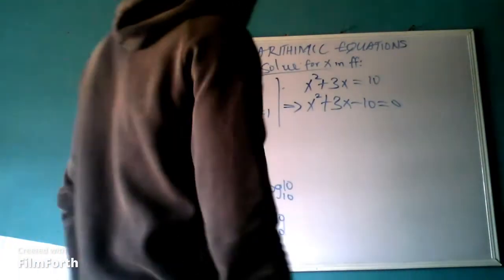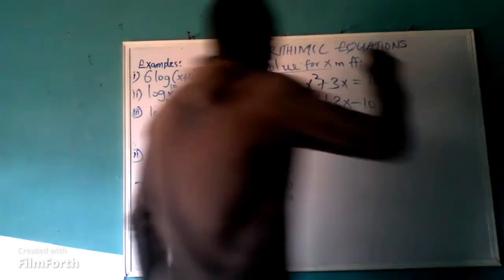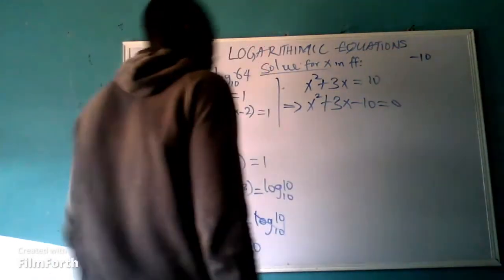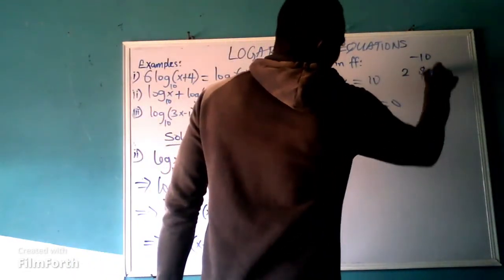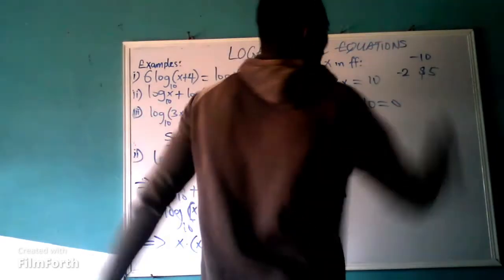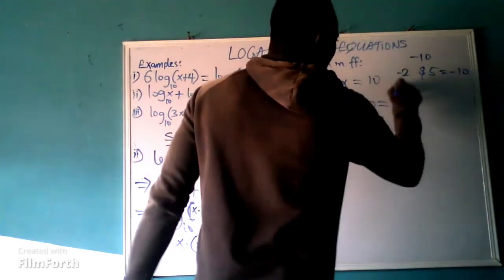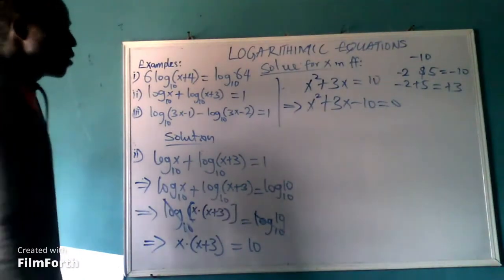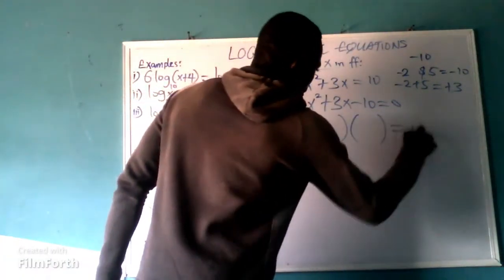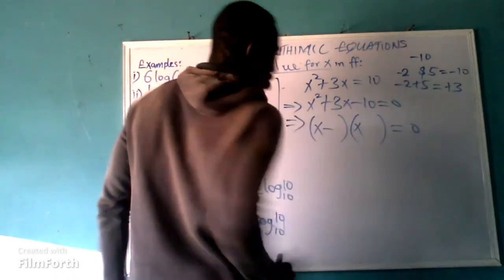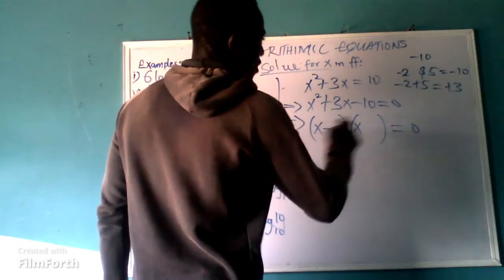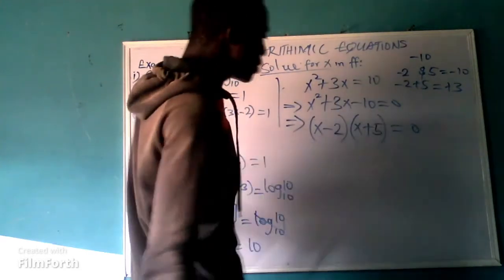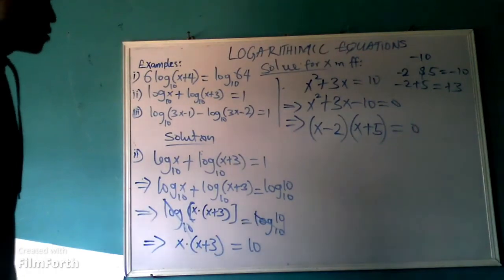Which method do we apply? Let's try factorization. We look for factors of negative 10 that when added together give positive 3. We have minus 2 and 5: minus 2 times 5 gives negative 10, and minus 2 plus 5 gives positive 3. So minus 2 and 5 are the factors we need. We put down our brackets with the variable and share the factors: (x minus 2) and (x plus 5). It doesn't matter the order.